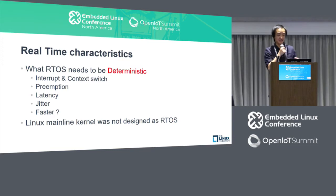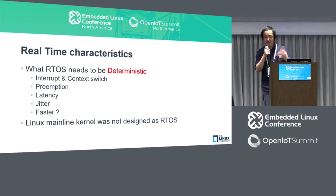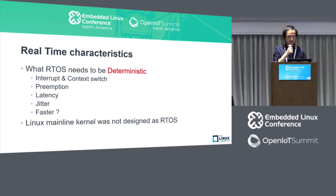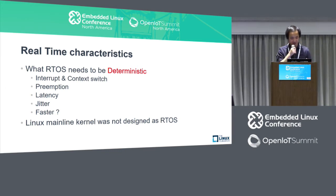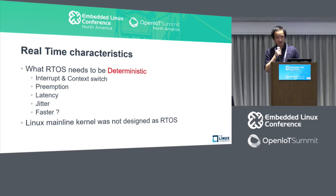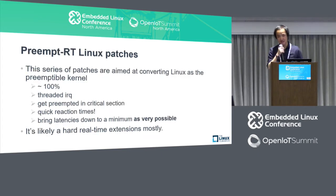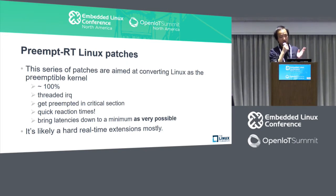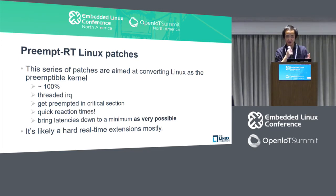I think a real-time system can reliably take the same amount of time to do the same thing each time. In terms of this, Linux is close to a soft real-time operating system, because it's not designed as an RTOS. But we need it. So a couple years ago we got preempt-RT Linux — actually it's a set of kernel patches. Basically it can help us convert mainstream Linux to a fully preempted kernel.